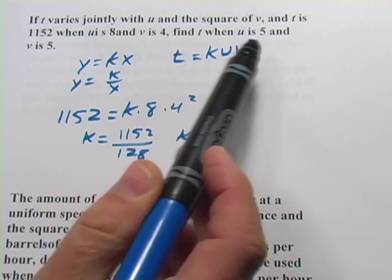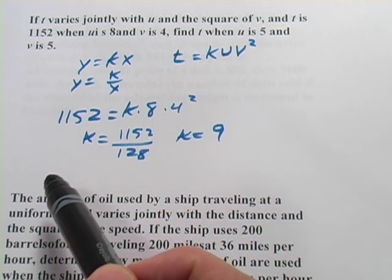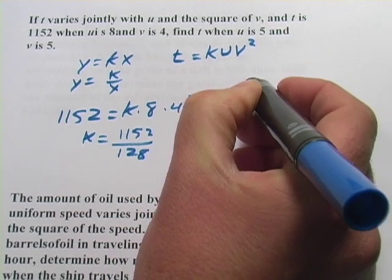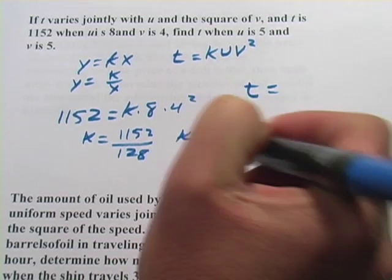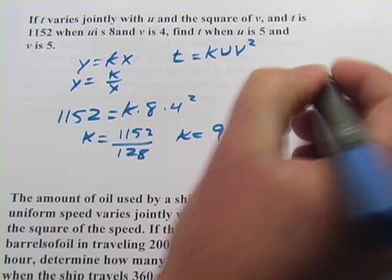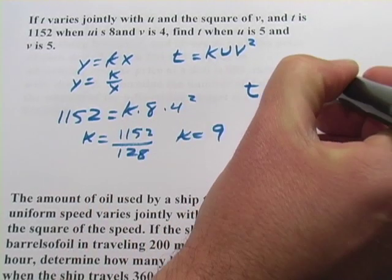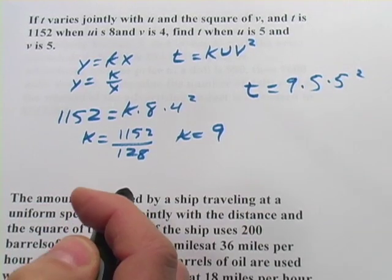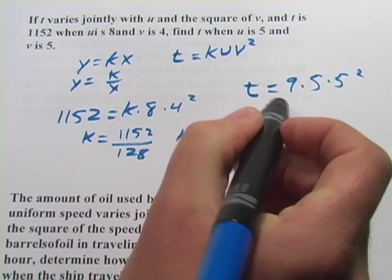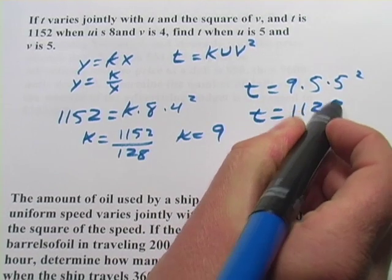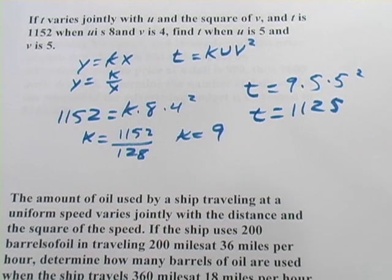And now it says find t when u is 5 and v is 5. So t equals k, which is 9, times u, which is 5 now, times v squared, and that's 5 squared. So 9 times 5 times 25 is going to be our answer there, and it should be 1125. So that's some joint variation. Let's look at another one.